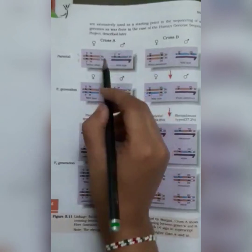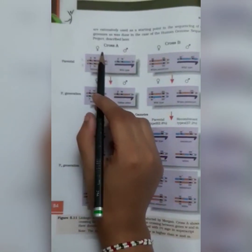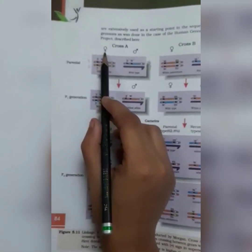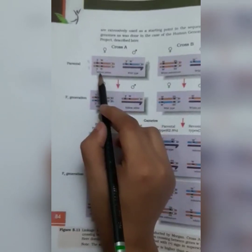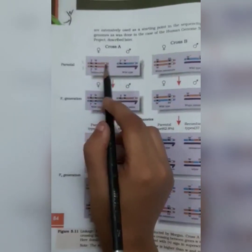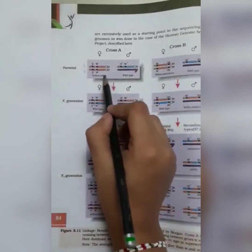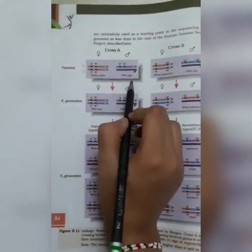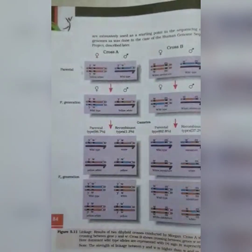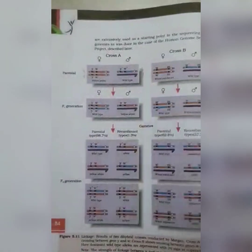Here this is cross A. He has taken female with yellow body and white eye, and male which is wild-type with brown body and red eye.